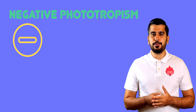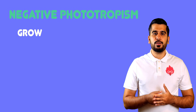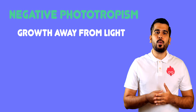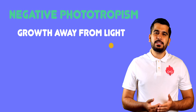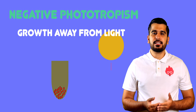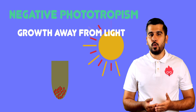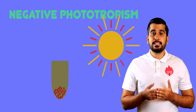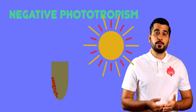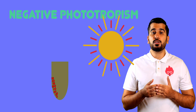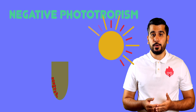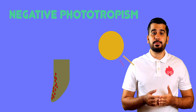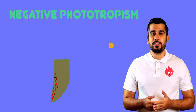The root tips, however, will show negative phototropism, which is growth away from light. This is because the shaded side will have more auxin, but instead of causing it to grow faster, it will slow down growth. So the root tips will grow away from the light source.